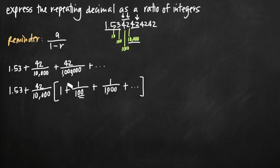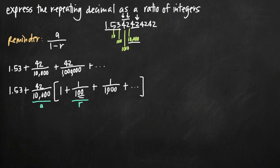Your series should always begin with 1 once in this form. With the series in this form, the value you factored out — 42 over 10,000 — is a. The value that comes immediately after the 1, which is 1 over 100, is r. Keep in mind that if you ever have a negative sign there, you need to include that in your value for r. We pull out the values for a and r and plug them into the formula a divided by 1 minus r, which gives us the sum of the geometric series. We always have to add the 1.53 — that part is separate from the series.